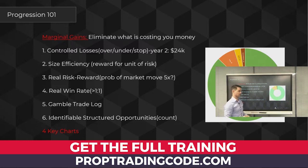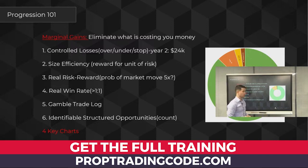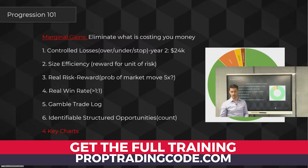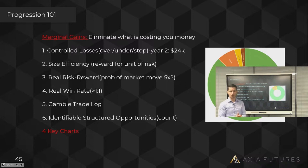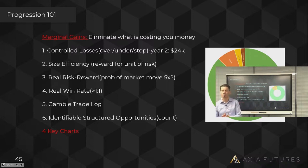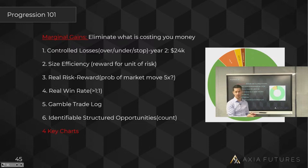Unfortunately, traders focus on a data point called P&L, which is just a really useless gauge — because why? It's output-based. You've got to focus on data that's input-based, because input-based data is ultimately the decisions you're taking in real time. You can't control outcomes, you can't control the P&L — so why bother trying to control it?